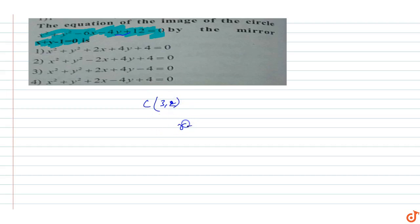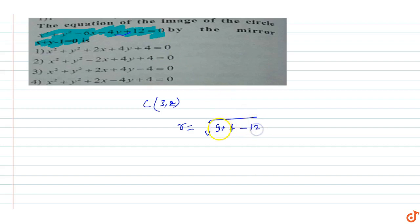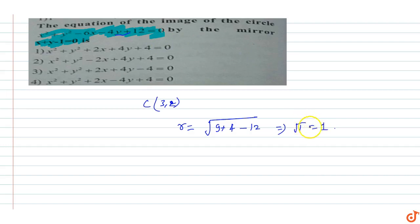The circle has center coordinates (3, 2). The radius is r = √(g² + f² - c). So g² is 3² = 9, plus f² = 2² = 4, minus c = 12. That gives √(9 + 4 - 12) = √(13 - 12) = √1 = 1. So the radius of the circle is 1.